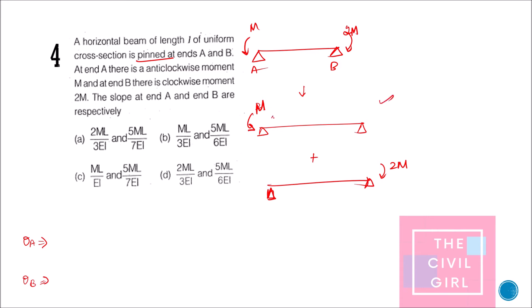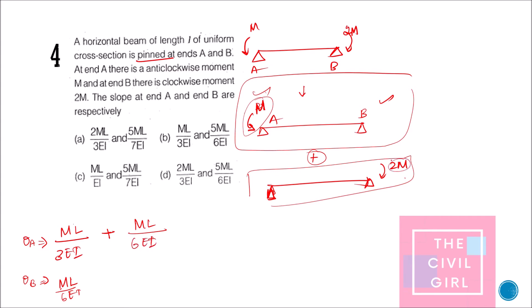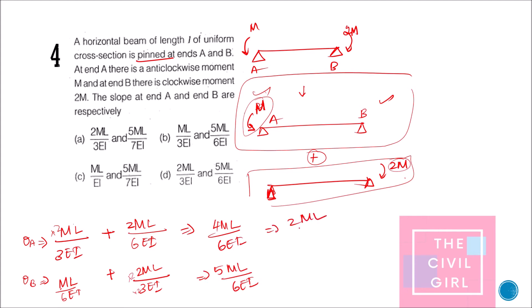For the moment M applied at A: θ_A = ML/3EI and θ_B = ML/6EI. For the moment 2M applied at B: since A is at the farther end, θ_A contribution = 2ML/6EI and θ_B contribution = 2ML/3EI. Adding both cases, the total θ_A = ML/3EI + 2ML/6EI and total θ_B = ML/6EI + 2ML/3EI, giving the result 2ML/3EI. The answer is option D.